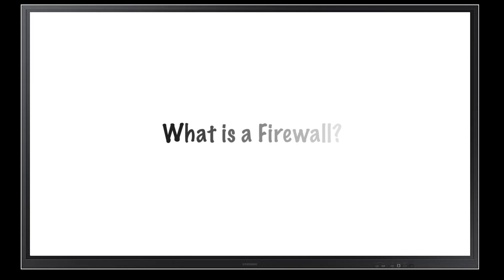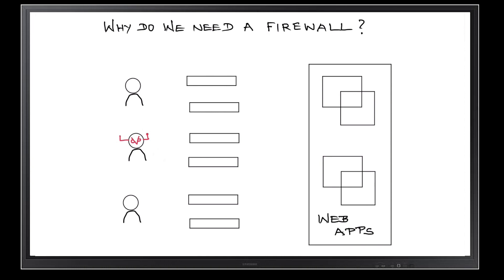Let's start with the basics. What is a firewall? It is just a filter that sits between a private internal network and the public internet. Its primary purpose is to allow legitimate traffic and deny illegitimate traffic.